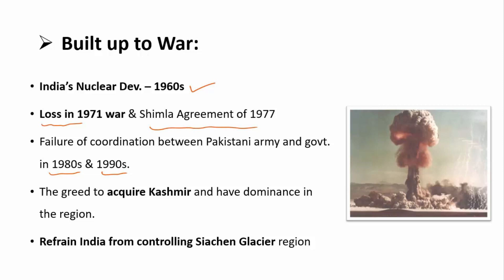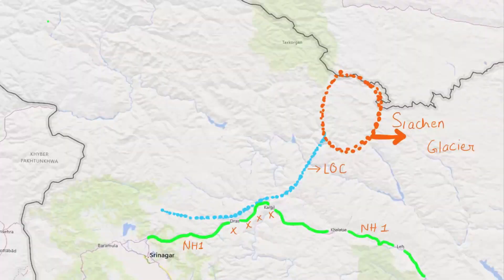Around 1998, there was General Pervez Musharraf, the army chief, who decided to escalate and started planning attacks in the Kargil region. One of the main reasons was the Siachen Glacier region, where India had control. Pakistan did not want India to control it, and they also wanted to establish dominance in that area.